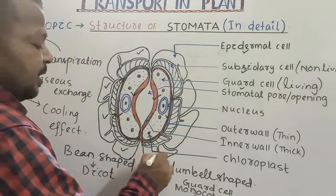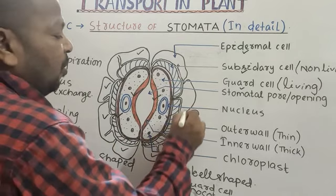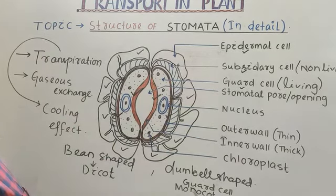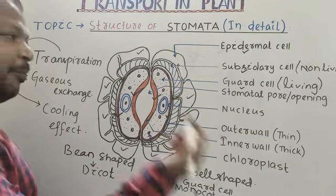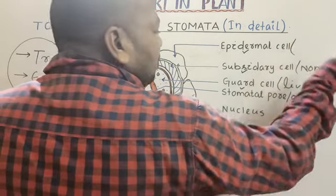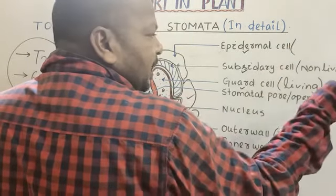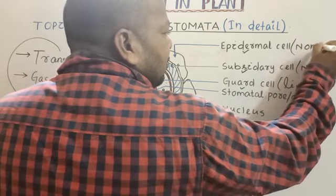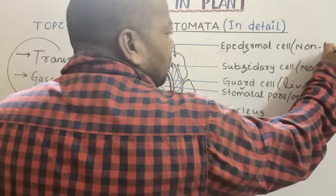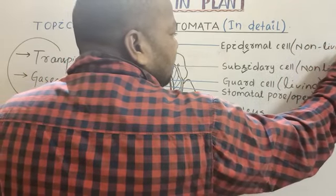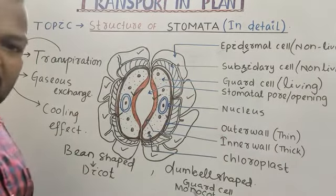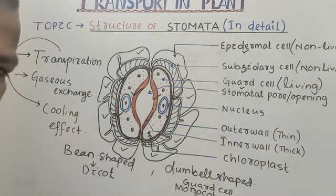Surrounding the subsidiary cell is another cell called the epidermal cell. Epidermal cell is also non-nucleated — having no nucleus — hence it is also non-living.